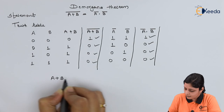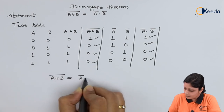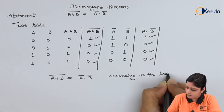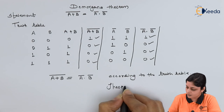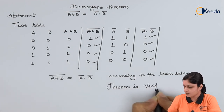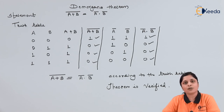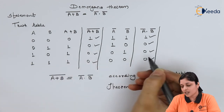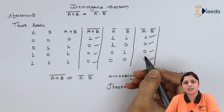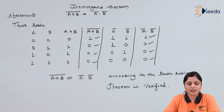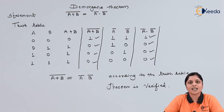From the truth table, A plus B bar equals A-bar dot B-bar is verified. So this is all about De Morgan's theorem. For both theorems the proof is given specifically for two inputs, but you can extend the same explanation for three inputs as well — the statements for three inputs have already been mentioned. Thank you for watching this video. Stay tuned with Ikeda and subscribe to Ikeda.